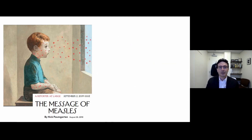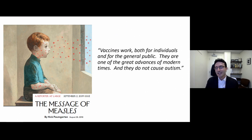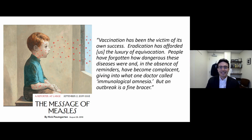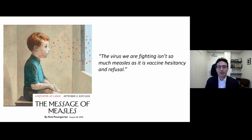I'd strongly recommend reading this article published in the New Yorker about the measles outbreak last year in communities with lower vaccination rates. Here are a couple of excerpts: 'Vaccines work both for individuals and for the general public. They are one of the great advances of modern times, and they do not cause autism.' And: 'Vaccination has been the victim of its own success. Eradication has afforded us the luxury of equivocation. People have forgotten how dangerous these diseases were and have become complacent, giving in to what one doctor called immunological amnesia.' He closes by saying, 'The virus we are fighting isn't so much measles as it is vaccine hesitancy and refusal.'